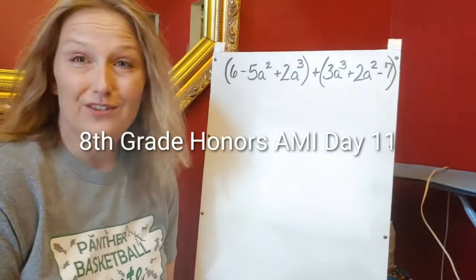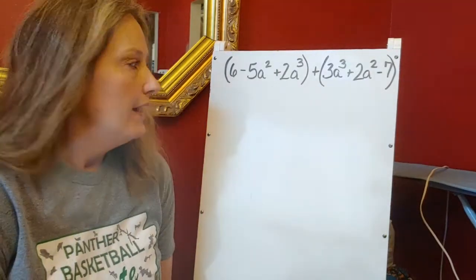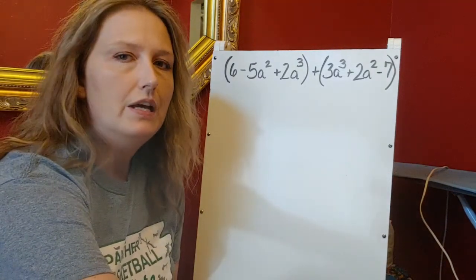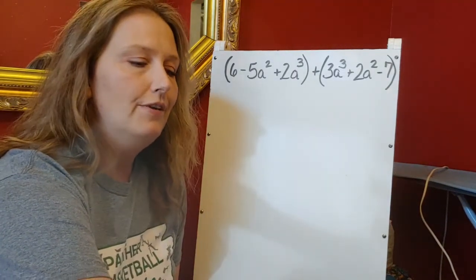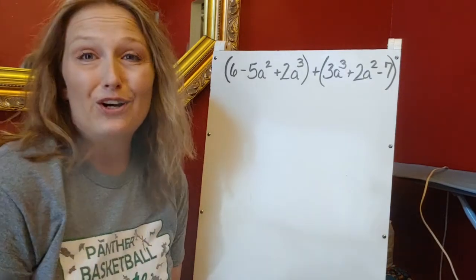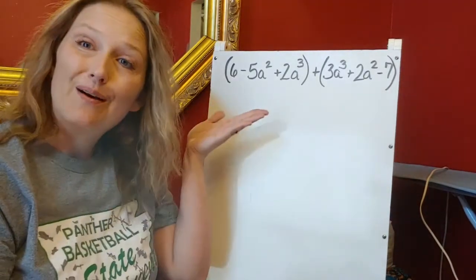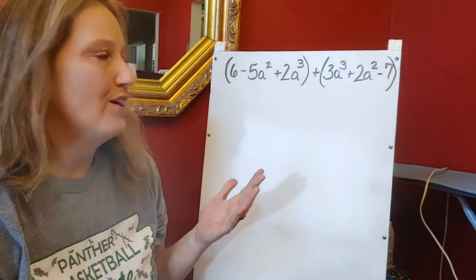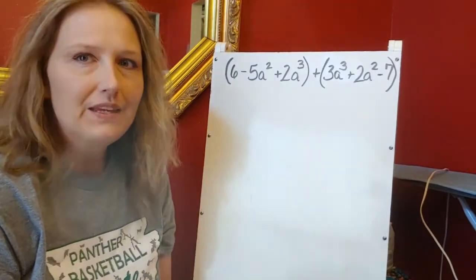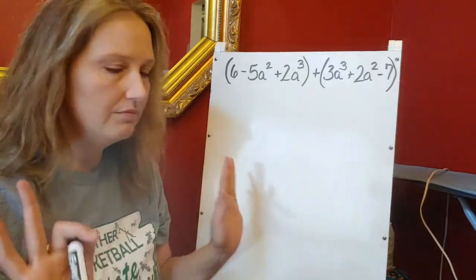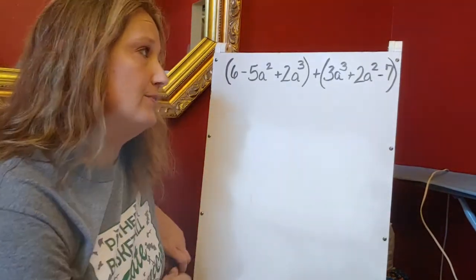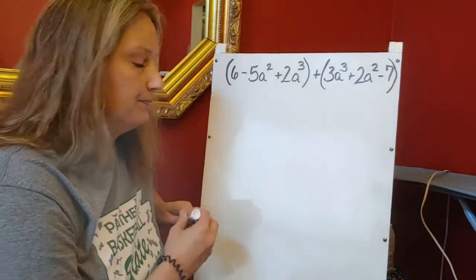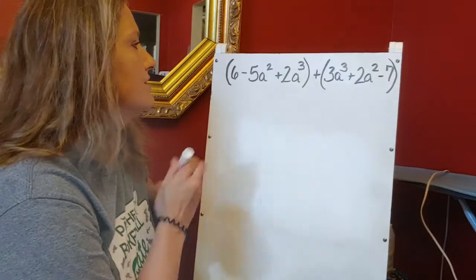All right, algebra, here's your Day 11 AMI. Your Day 11 AMI has to do with polynomials. A polynomial is just a fancy word for a many-termed expression, and we have many terms. We're simplifying to start off with — we're going to start with addition. This is super easy, don't let it freak you out. Just because there's a lot of terms in here, really all we're doing is combining like terms.